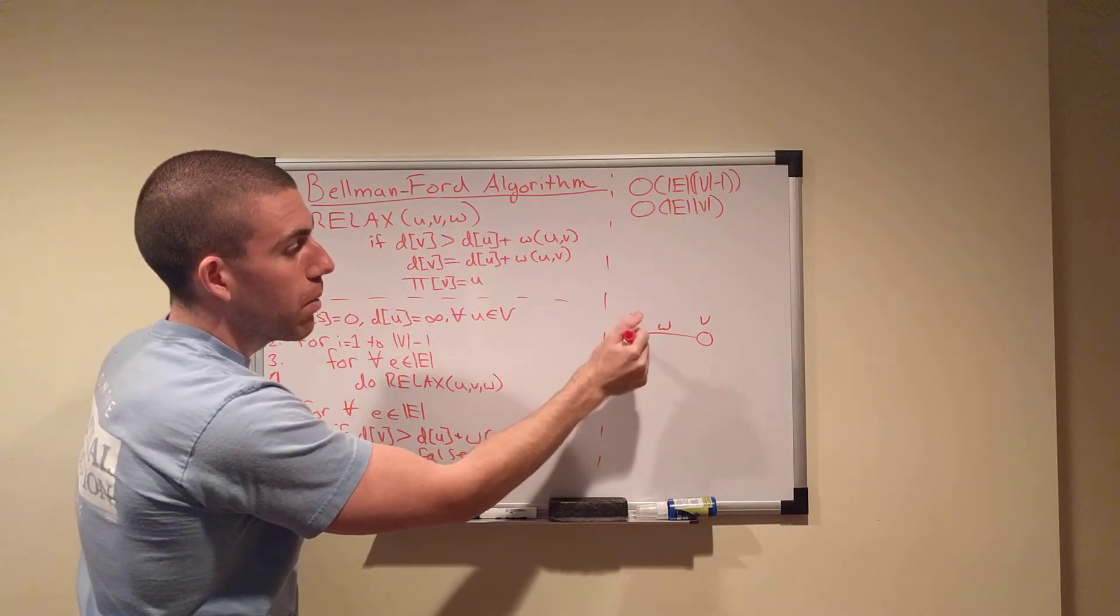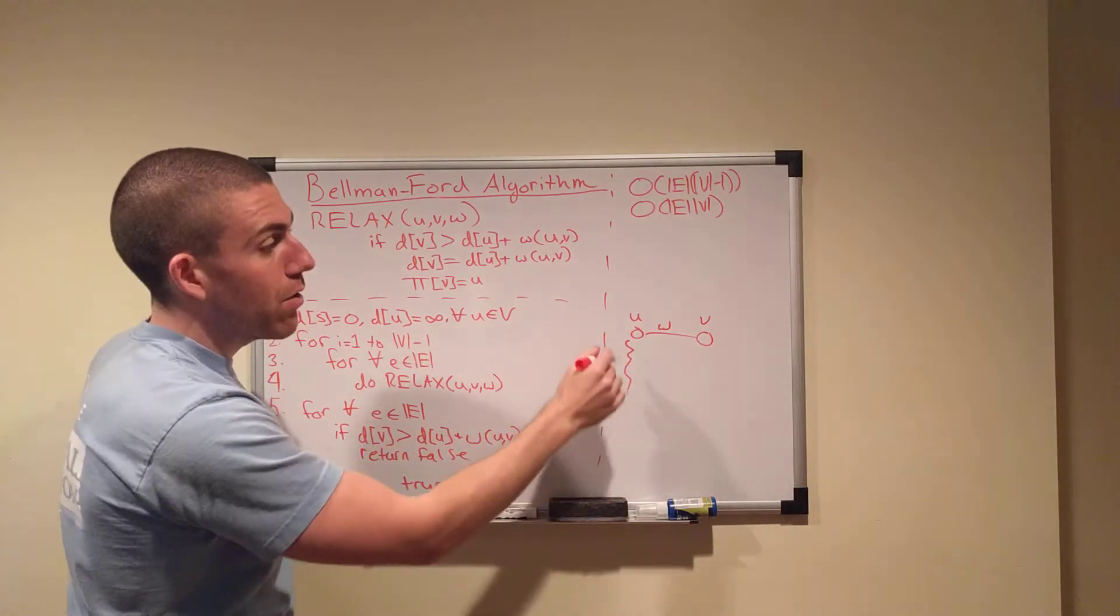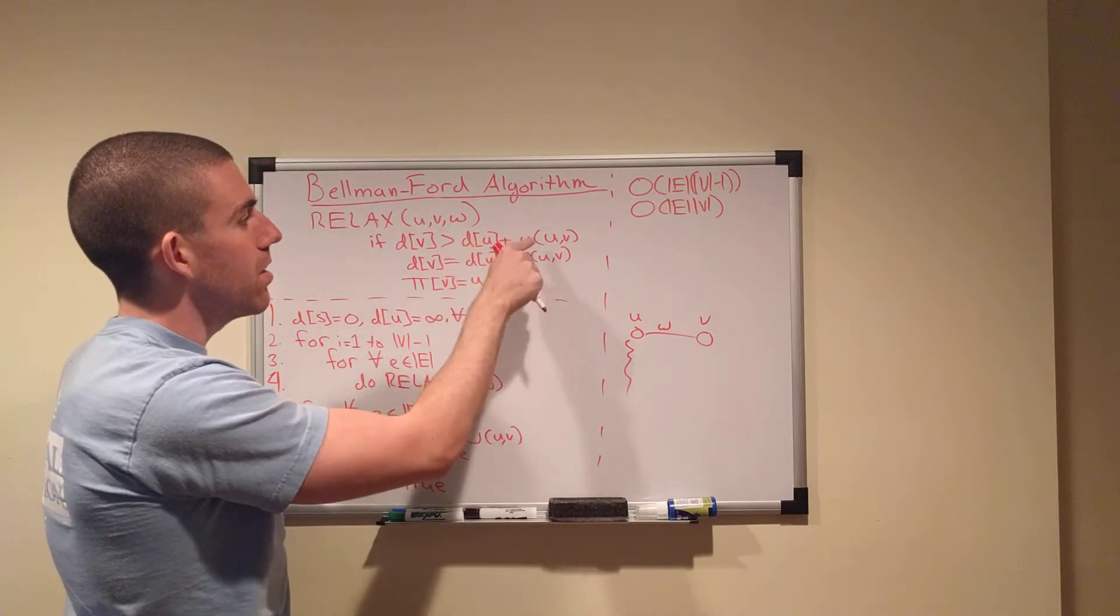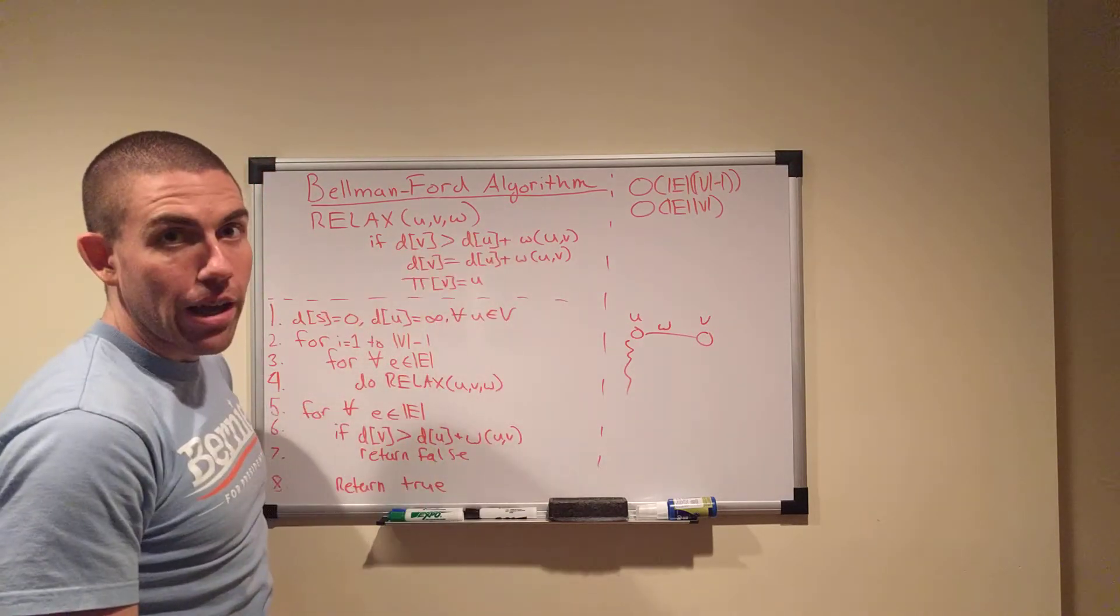And you compute that by saying, if it's bigger than the distance to U plus the weight of this edge. So, if you got to U from somewhere else in the graph, doesn't matter, you got to U, and then you went to V, is that distance shorter than the distance you already have recorded?